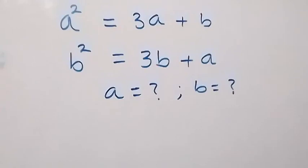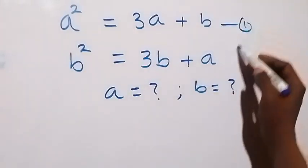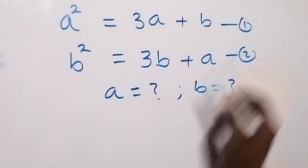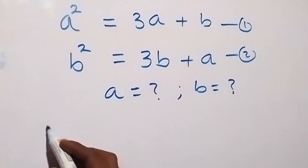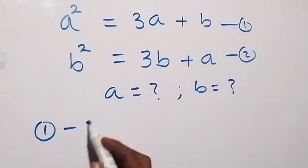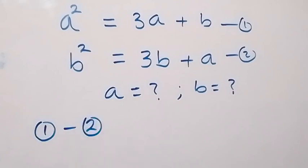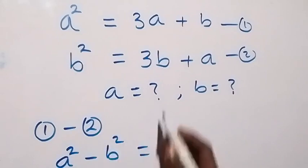Hello, you are welcome. Here I have a nice system of equations. Let's label this as equation 1 and this as equation 2. Now we subtract equation 2 from equation 1 — that is equation 1 minus equation 2. From the left-hand side this implies we have a squared minus b squared, which equals a.